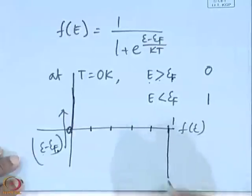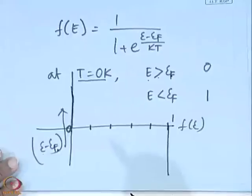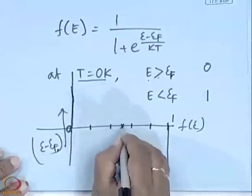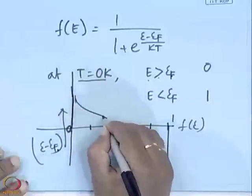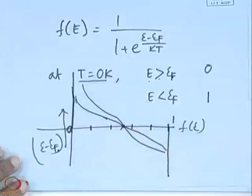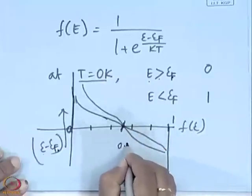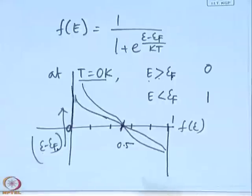As you go on increasing the temperature, this step curve broadens. But in all cases you will find that at E = E_f, the curve passes through 0.5. That means the probability of occupation is always half at the Fermi level.